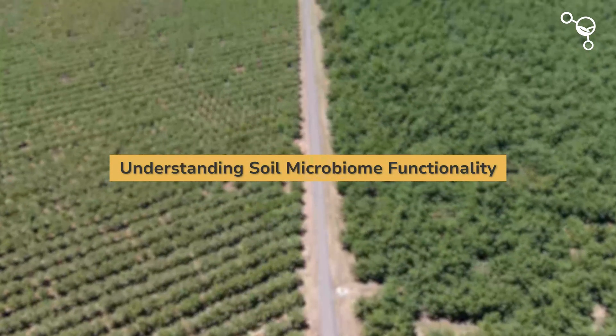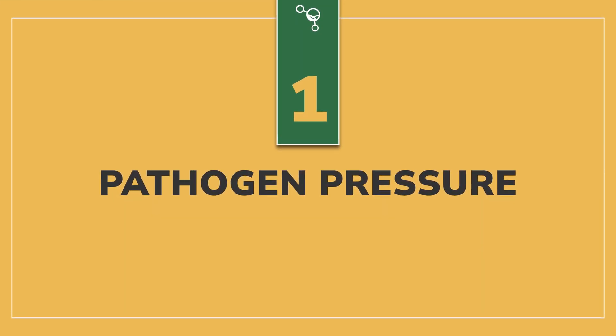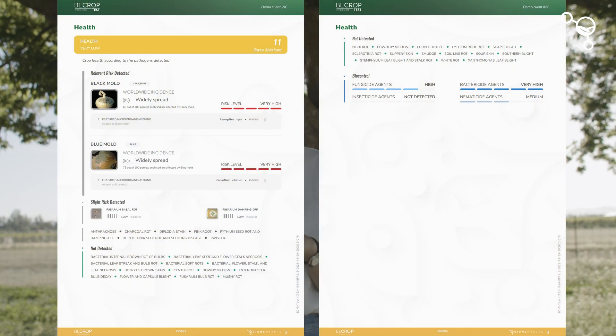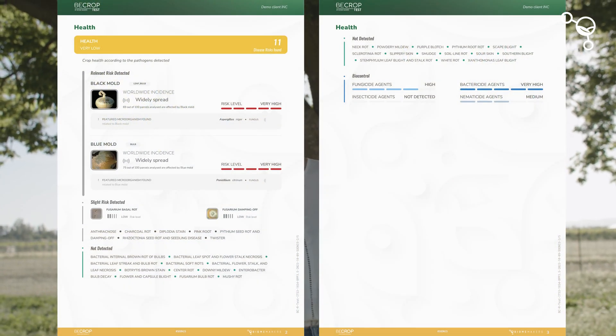We're going to look at the four parameters of functionality in the soil microbiome. The first one is pathogen pressure. We look at bactericide agents, insecticide agents, fungicide agents, and nematicide agents in the soil to see their quantity and ability to protect the soil from certain pathogens or stresses that fall in those categories. We'll report on specific pathogens that we see are at risk and the level at which we believe they're at risk, whether it's very low or very high.